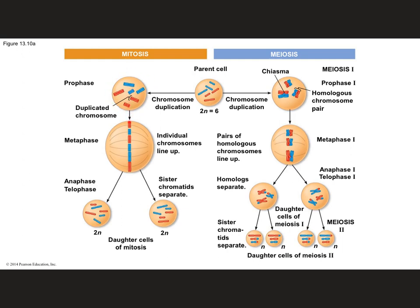However, the end result is much different. In mitosis, a diploid parent cell divides into two diploid daughter cells that are identical to one another and to the parent cell — for example, a skin cell duplicating into two identical skin cells. In meiosis, we start with a diploid cell and through the process get four daughter cells that have half the number of chromosomes, so they are haploid cells.